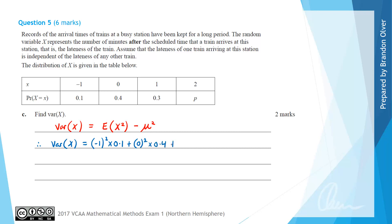0.4 plus 1 squared times 0.3 plus 2 squared times 0.2, the value of P.